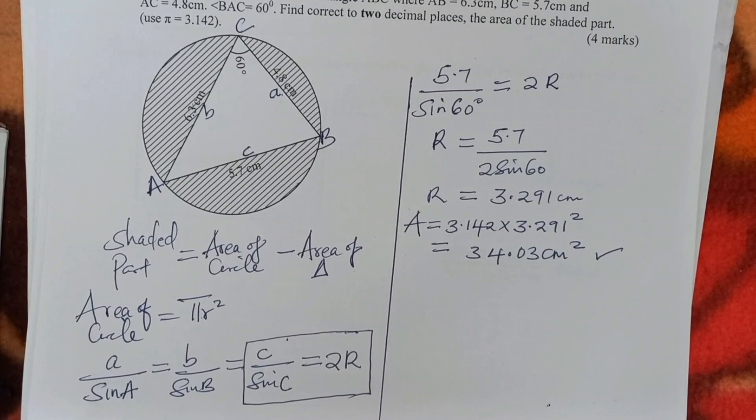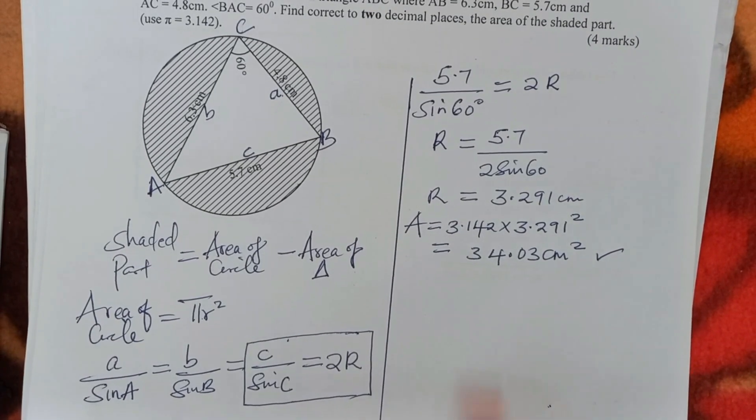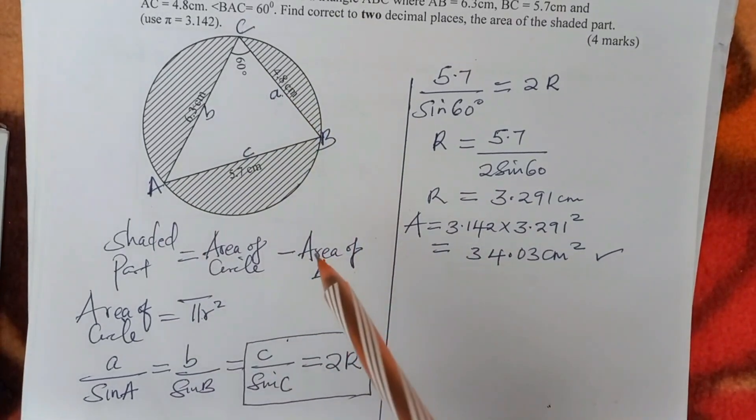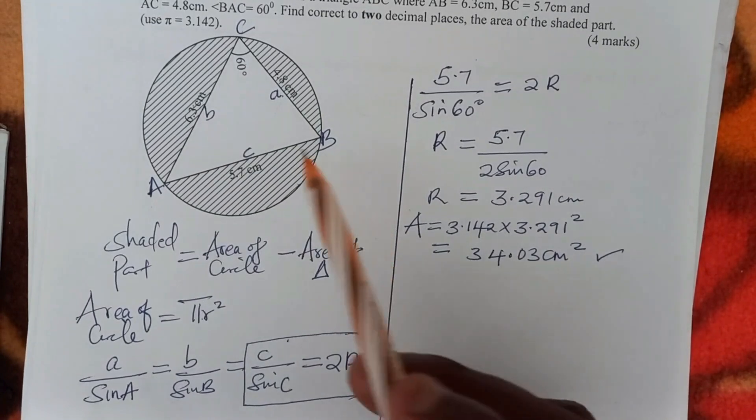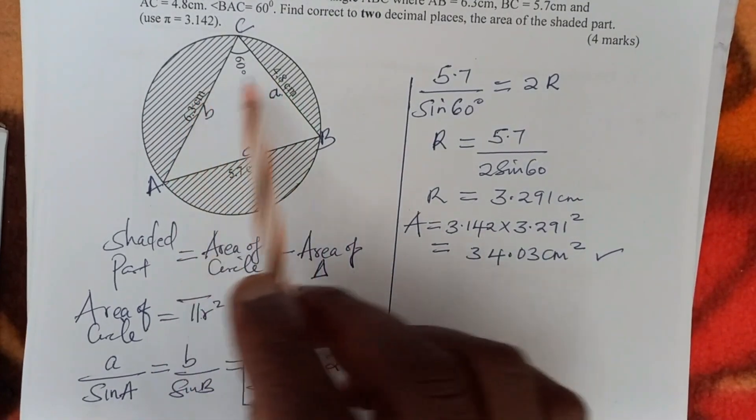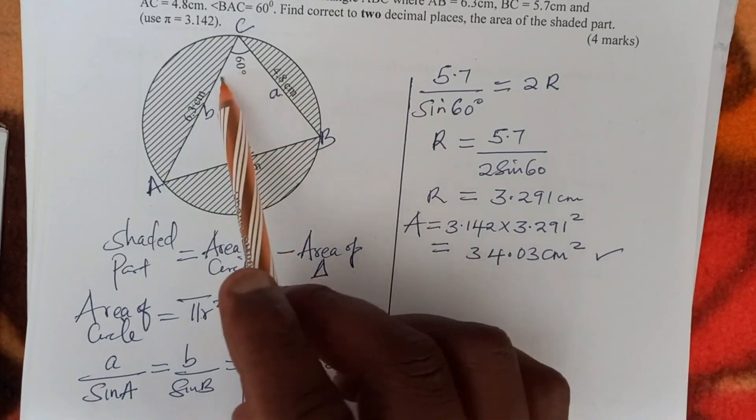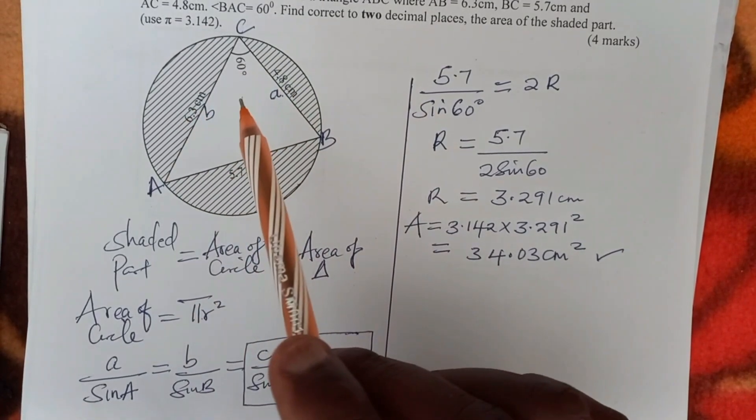Now we have the area of the circle. The next thing now is to get the area of the triangle. Look at this triangle ABC. How do we get the area of the triangle? Which formula do we use? When you look at this triangle, we have two sides and an included angle.